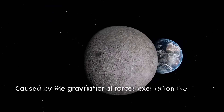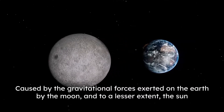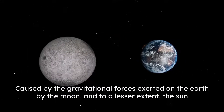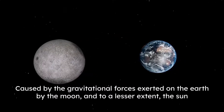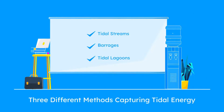Tides are caused by the gravitational forces exerted on the earth by the moon, and to a lesser extent, the sun. There are three different methods to generate tidal energy: tidal streams, barrages, and tidal lagoons.